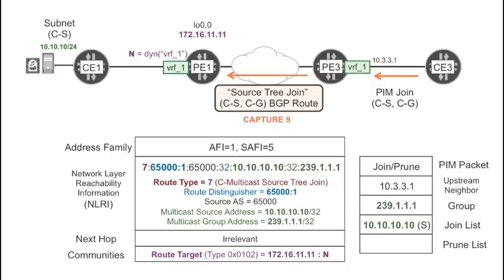The second part of the route target is a number that was dynamically generated by PE1 and identifies VRF1 locally at PE1. In this way, the source tree join is not only targeted at PE1, but also to VRF1 in PE1.